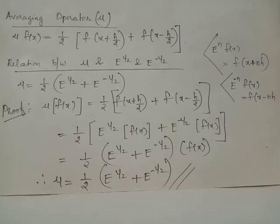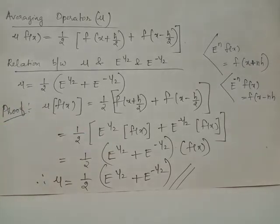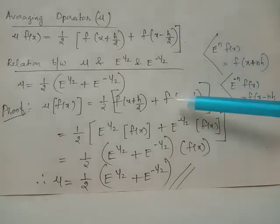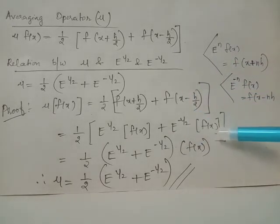We can rewrite f(x + h/2) as E raised to 1/2 acting on f(x). This is because when E raised to n acts on f(x), the output is f(x + nh). Here the order of the shift operator is 1/2, therefore the output displayed will be f(x + h/2). Similarly, you can rewrite f(x - h/2) as E raised to minus 1/2 acting on f(x).